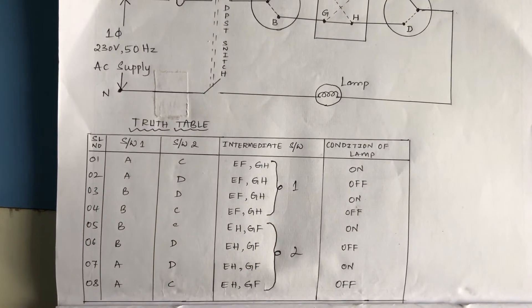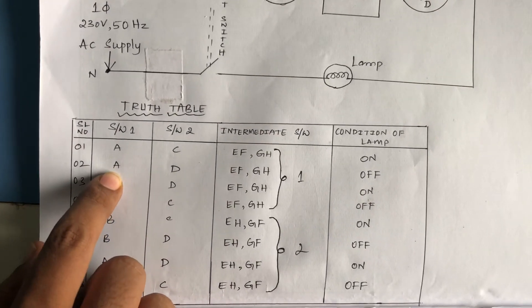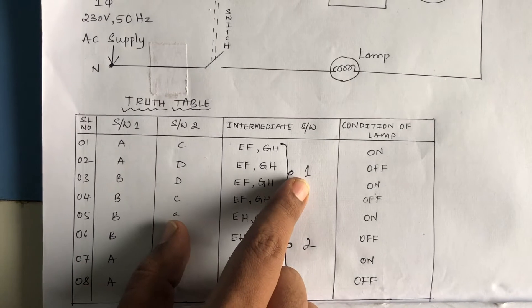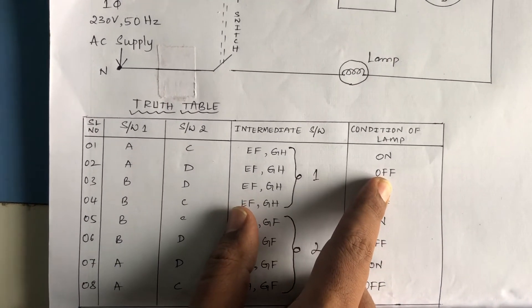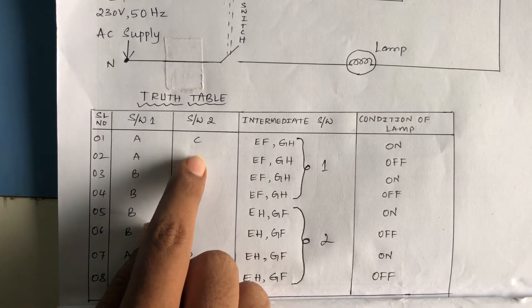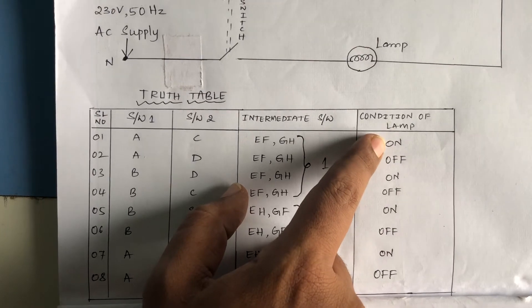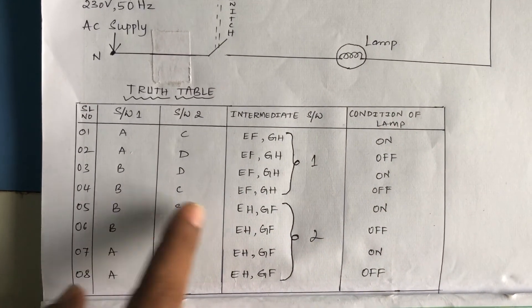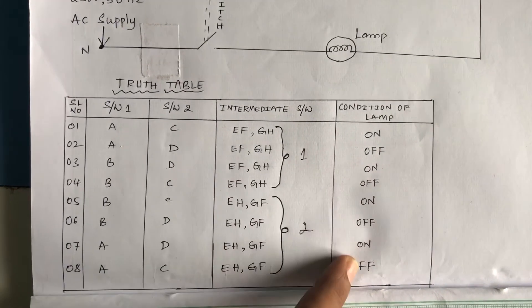In our demonstration, initially switch 1 is in position A, switch 2 is in position D, and the intermediate switch is in position 1 — the lamp is off. When the intermediate switch is shifted to position 2 and switch 2 is moved to position C, the lamp turns on. For different switch positions, we observe the condition of the lamp.